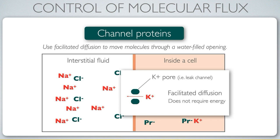A channel protein cannot hydrolyze ATP — it cannot do primary active transport. Instead, it can only allow ions to move across the membrane through facilitated diffusion through a water-filled opening. Channel and carrier proteins are both important to the story of glucose absorption in the small intestine.